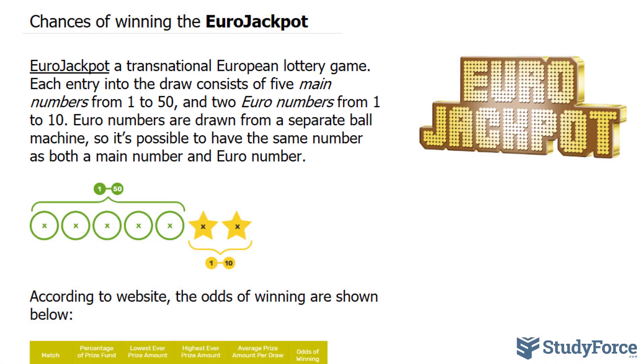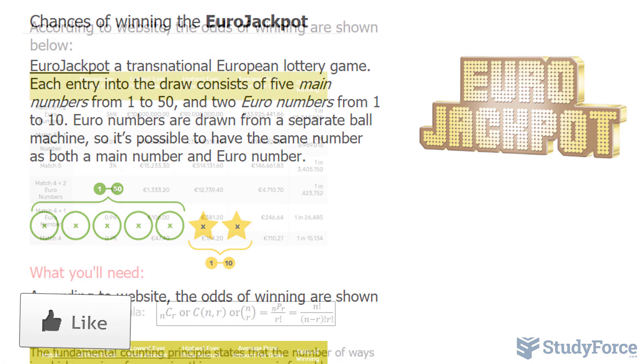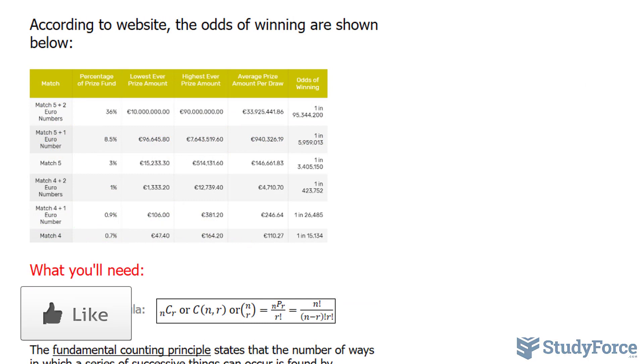From their website, they have a schematic of how to win. You have to choose 1 through 50 balls and 1 through 10 Euro balls. The website also tells us the probability of winning each prize. Have a look. If you get the 5 balls and the 2, that's a 1 in 95.3 million chance.